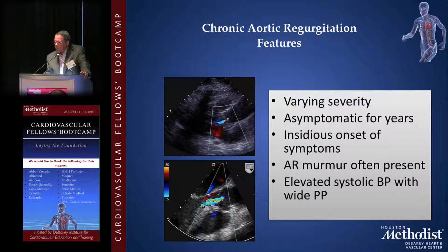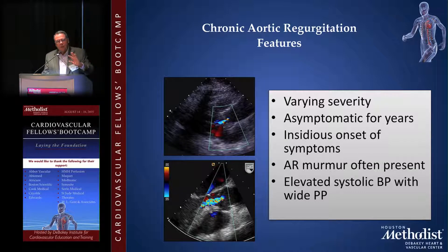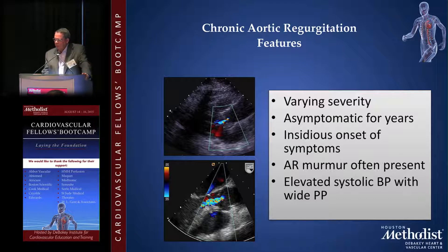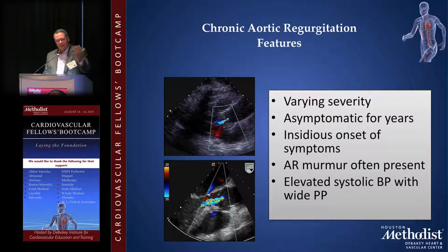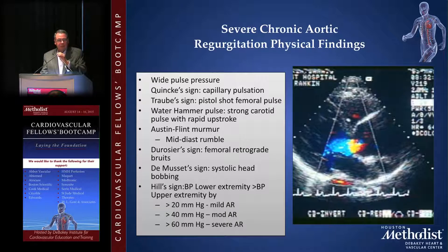When you get into real AI — moderate to severe — unless something dramatic happens, this is usually a chronic illness where you have plenty of time to follow the patient, determine when they get symptoms, and determine what to do. They go asymptomatic for many years. As you start getting worse and worse AI, systolic pressure starts rising and diastolic goes down. There's a long list of beautiful signs developed over the years when people were observed until they died because there was no surgery.